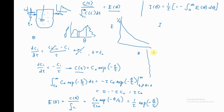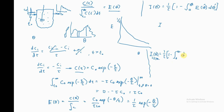For the CSTR, I(θ) = (1/τ)·[1 − integral from 0 to θ of E(θ')·dθ']. We've just discovered that for the CSTR, E(θ) = (1/τ)·exp(−θ/τ). Substituting in and evaluating the integral from 0 to θ, we get I(θ) = (1/τ)·[1 − (−τ)·(exp(−θ/τ) − exp(0))].